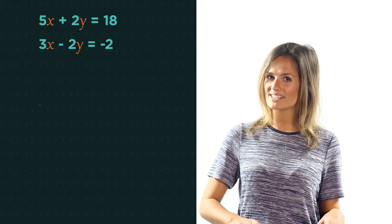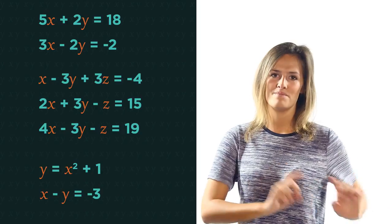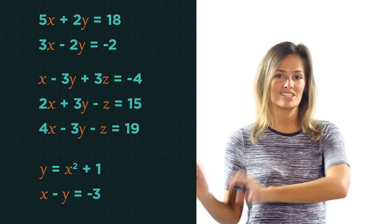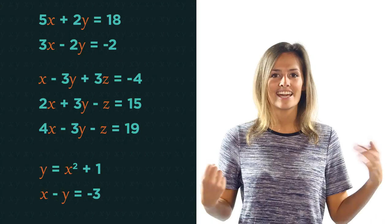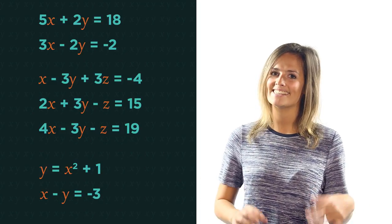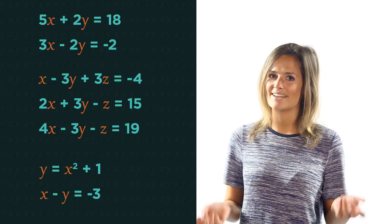In this video we're going to discover how to solve simultaneous equations by substitution. Simultaneous equations are two or more equations with two or more unknowns. They're called simultaneous because they need to be solved at the same time.